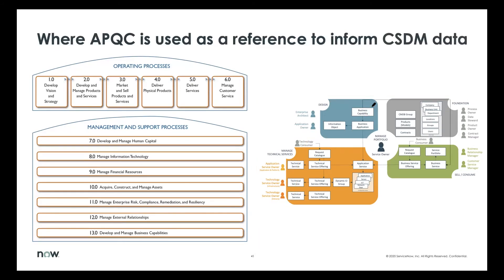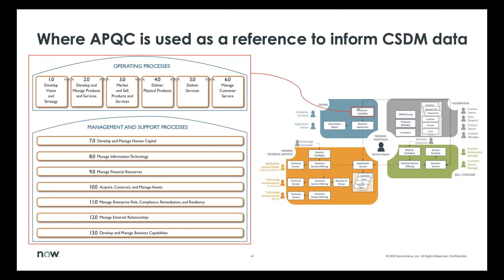There are a couple of really interesting use cases. One is using APQC in designing business capabilities — there's a common need for understanding those capabilities and how those hierarchies break down. APQC is oftentimes a good place to start in defining your own capabilities, and because they have industry-specific versions, you can download one close to your industry and massage it from there. The other interesting use case is in defining your business services and service portfolio. As you automate more of your processes, those are reflected in your business services, and the APQC process classification framework tends to reflect the service portfolio structure. We often see the correlation between the business capability structure and service portfolio structure being very, very similar.